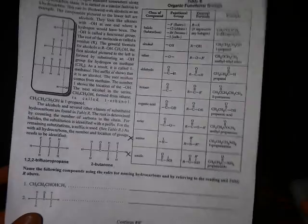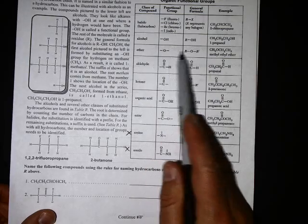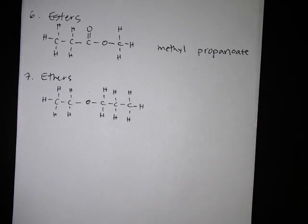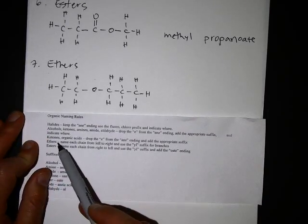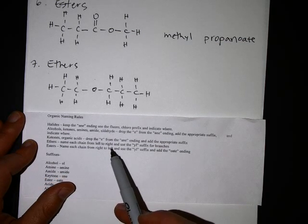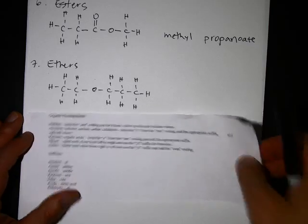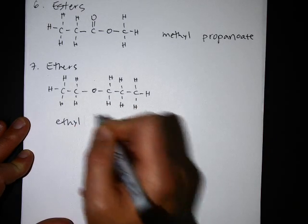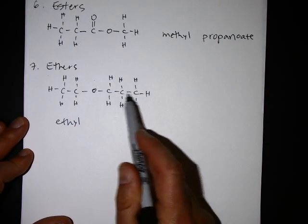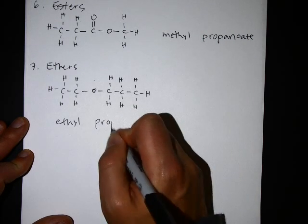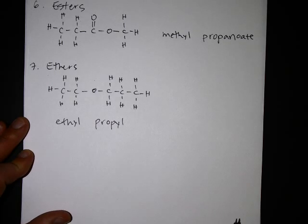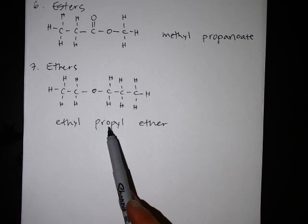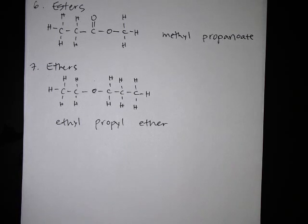Ethers: you identify an ether because it has carbons on the left, carbons on the right, and an O by itself in the middle — just like this one. The naming system: name each chain from left to right and add the -yl suffix for both branches. On the left side there are two carbons — that's ethyl. On the right side there are three carbons — that's propyl, and you add the -yl suffix as well. Then you just add the word 'ether.' So it's ethyl propyl ether. The name tells you: left side has two carbons, right side has three carbons, and it's an ether meaning there's an O separating the two chains.